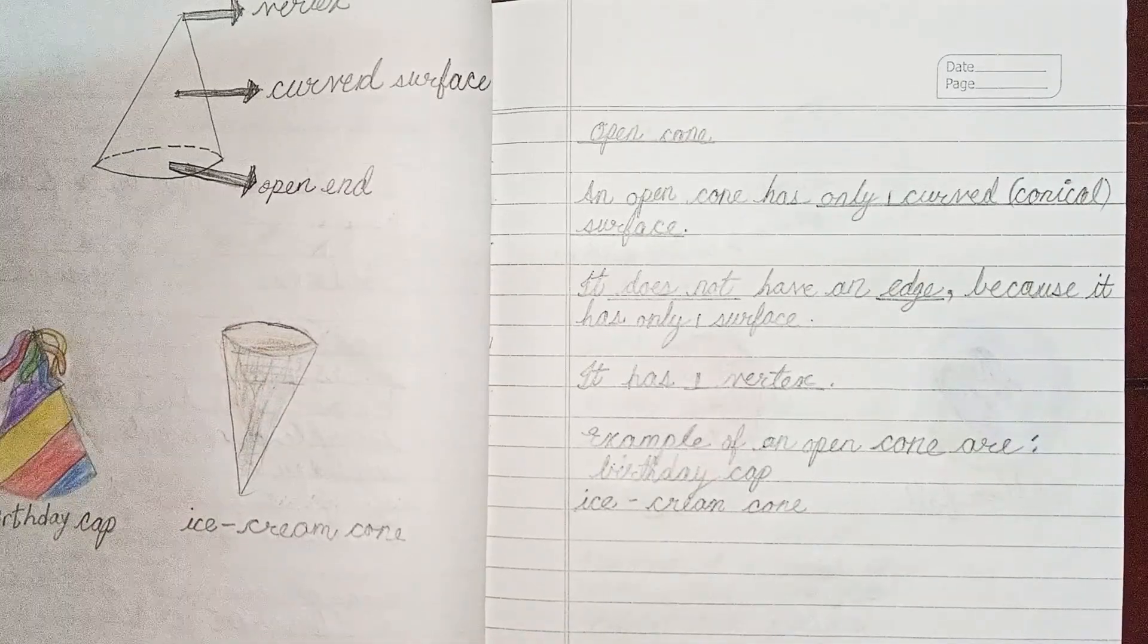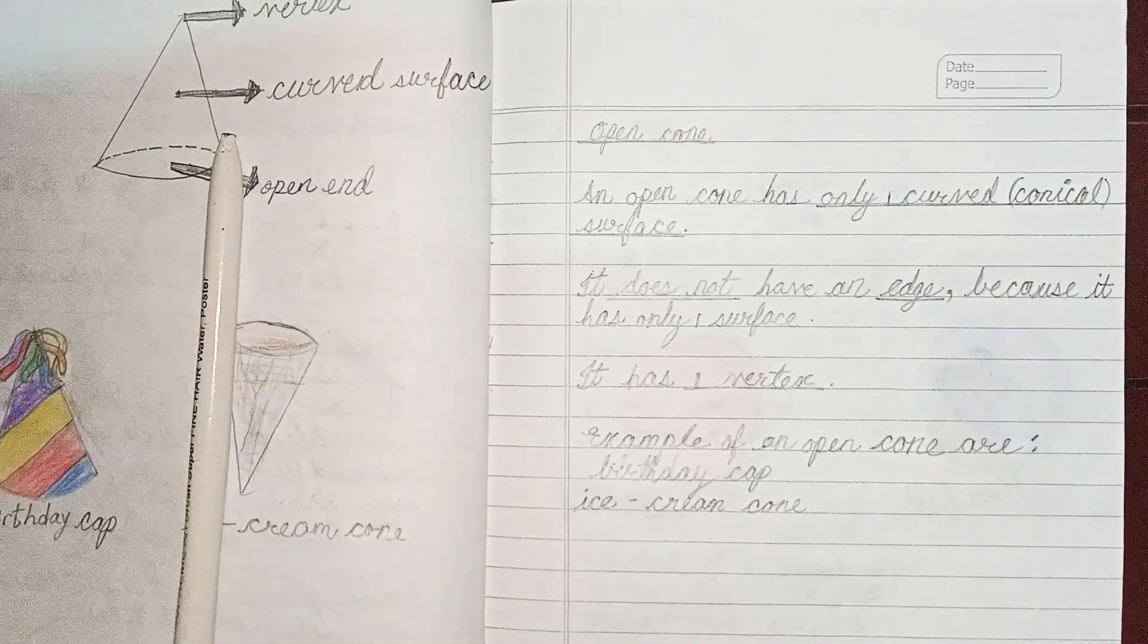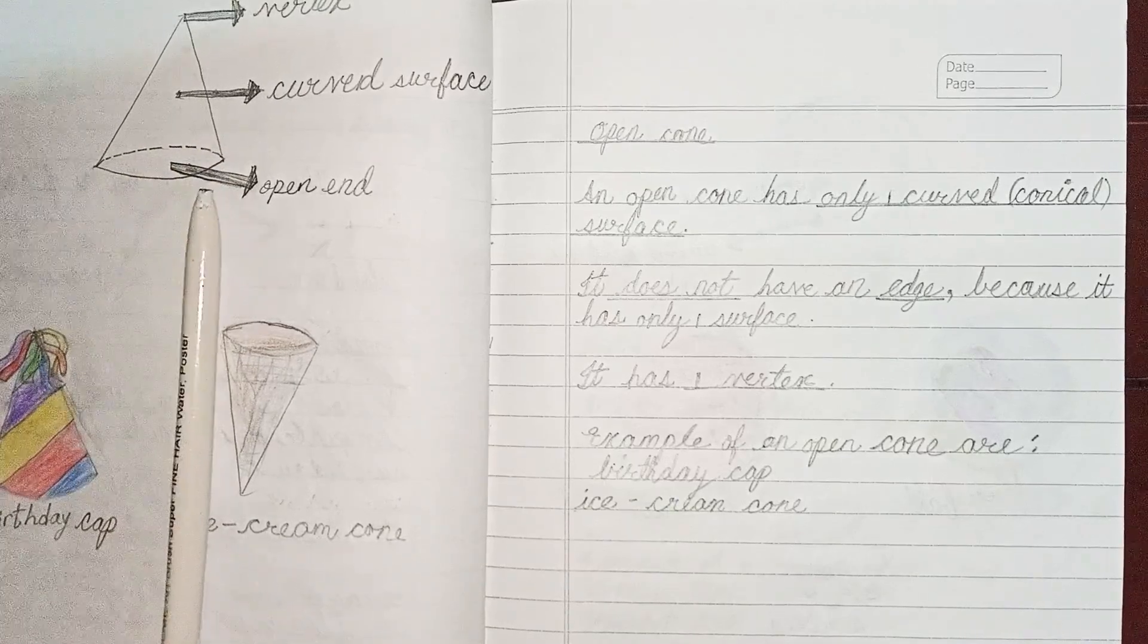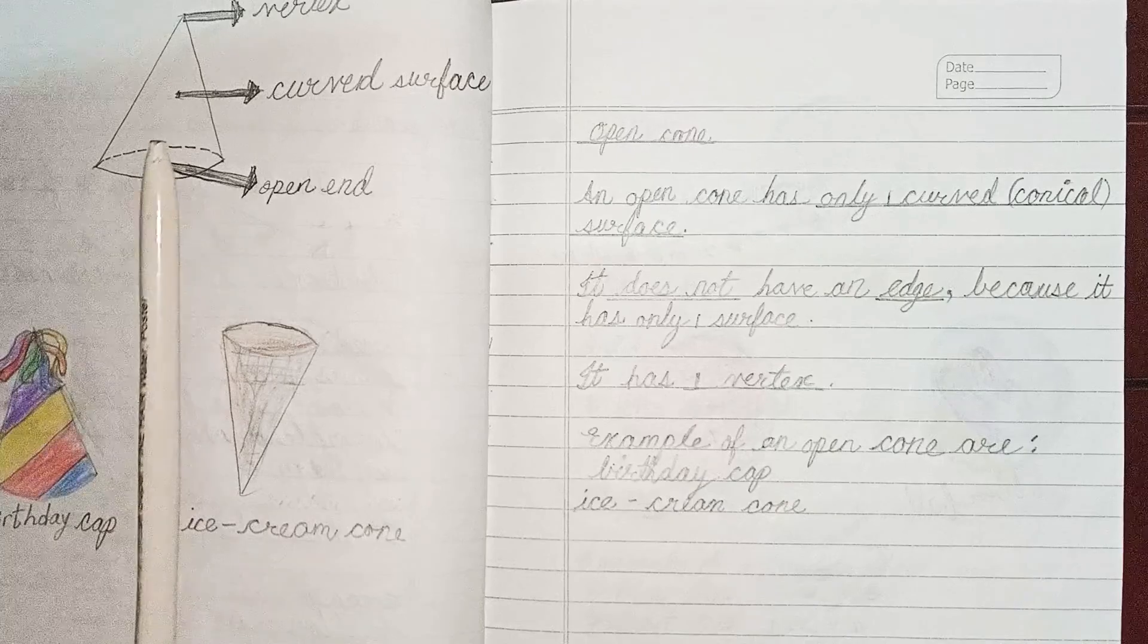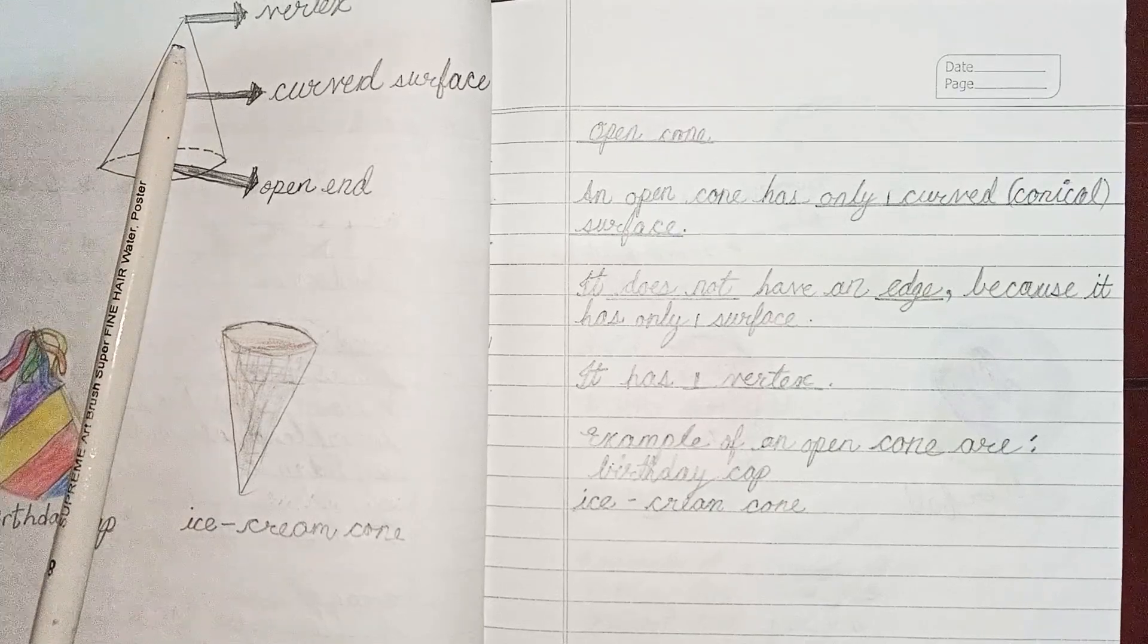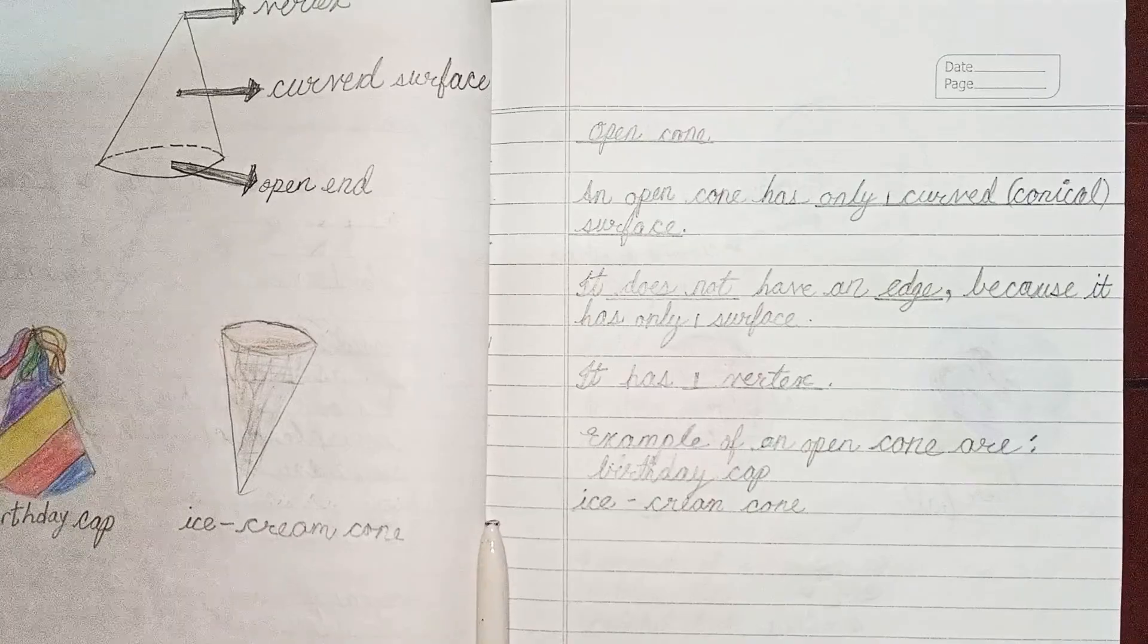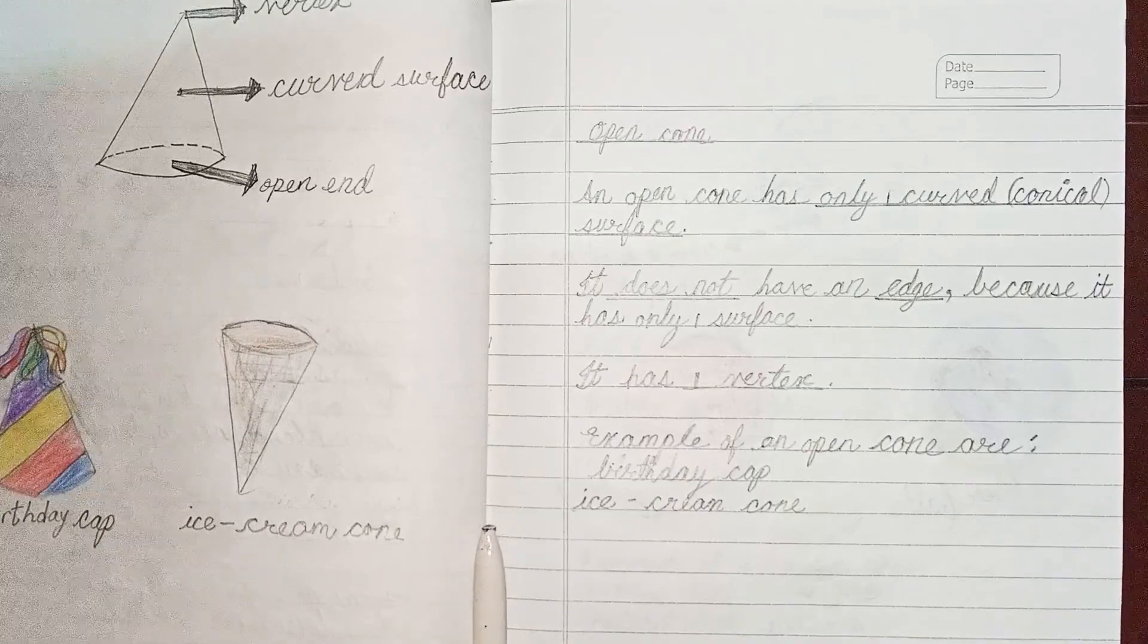An open cone has only one curved surface. It does not have any edge because it has only one surface. It has one vertex. Examples of an open cone are birthday cap, ice cream cone, etc.